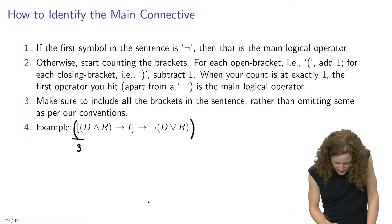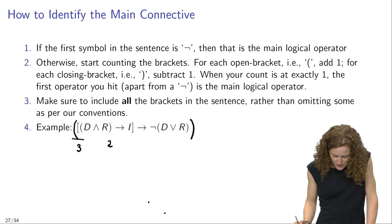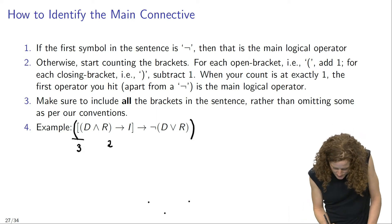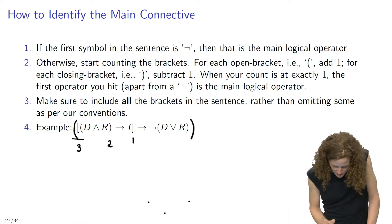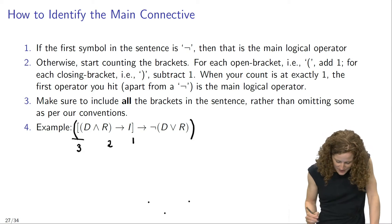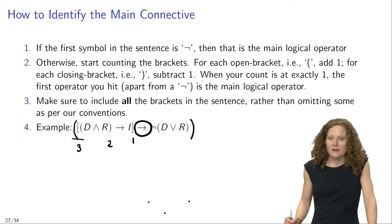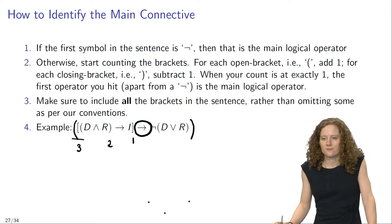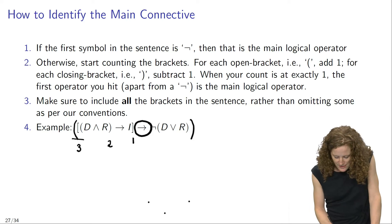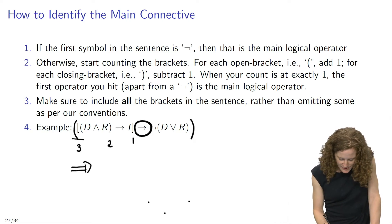I see one closing bracket, so that reduces my count to 2. I see another closing bracket, which reduces my count to 1. And now, the first connective that I see when my count gets to exactly 1 is this conditional here. And that means that the conditional is the main connective.